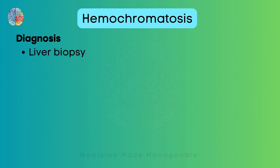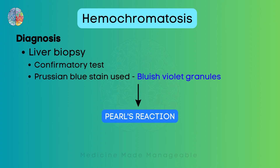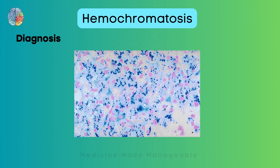We can also do a liver biopsy, which is a confirmatory test. If we perform a Prussian blue stain, we will be able to see bluish-violet granules. This whole reaction is called the Purls reaction. The Prussian blue stain shows bluish-violet granules — remember the Purls reaction.